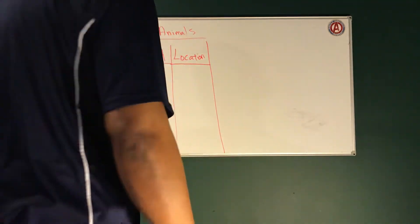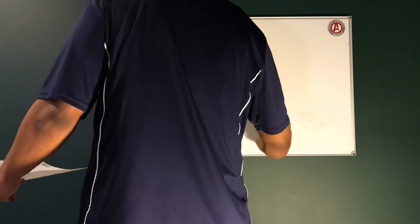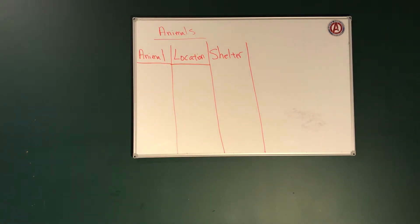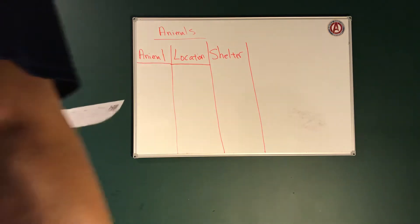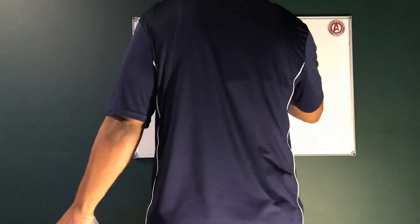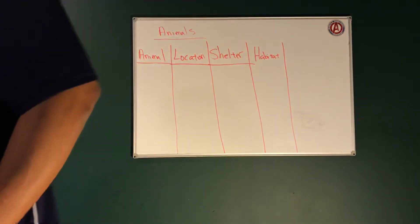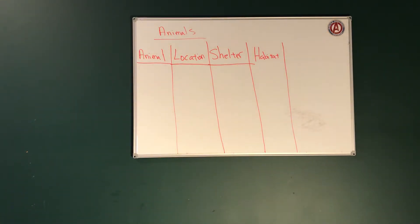Next, we're going to be looking at shelter. Shelter is what type of environment an animal lives in. Next, we're going to be looking at habitat. You're probably wondering, what's the difference between shelter and habitat? Well, shelter is a natural living area, while habitat is a temporary area that you would live in.